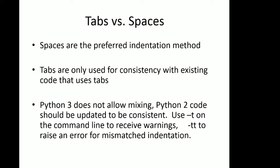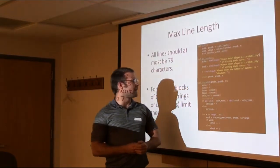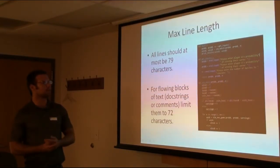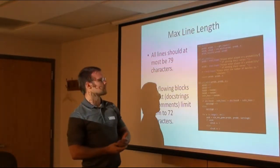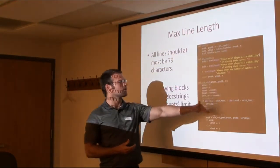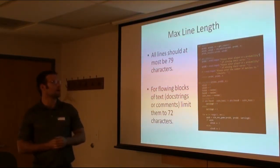Max line length: all lines should be at most 79 characters, and if it's a doc string or comment line, cap it at 72. This is for readability. When cutting things off, try to use Python's implied line continuation — for example, inside parentheses you can list variables one right below each other, which is a natural way to make your code more readable.